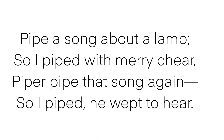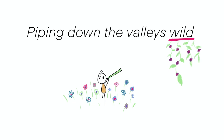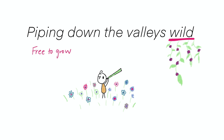Looking at the very first line, 'piping down the valleys wild' — the word 'wild' is expressing that the place the piper is in is free to grow. Wild is nature in its purest form, free from human interference. So the piper is piping in a place of complete innocence that is untouched by the hands of the world.